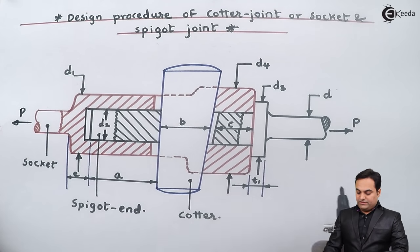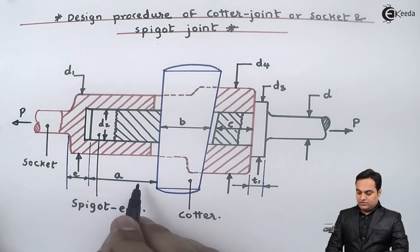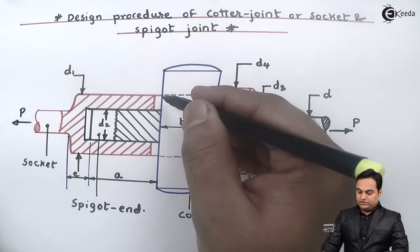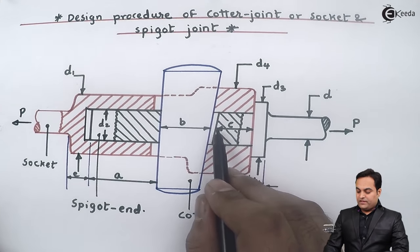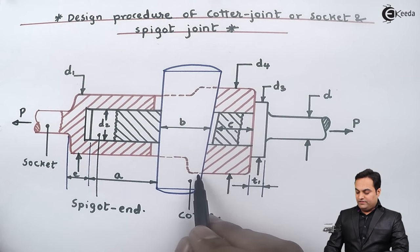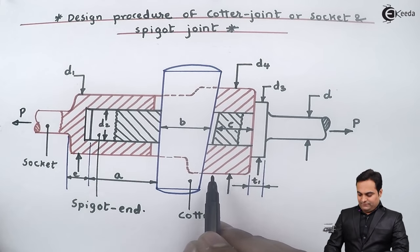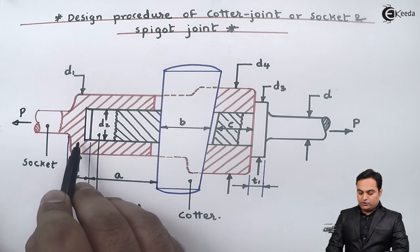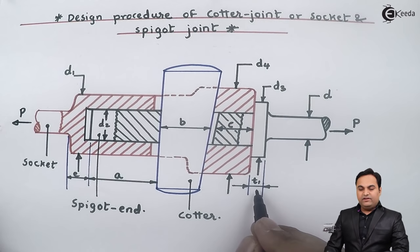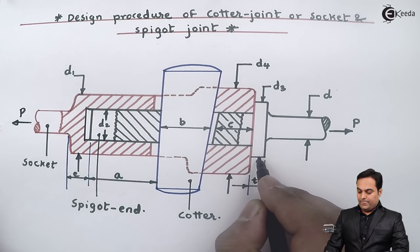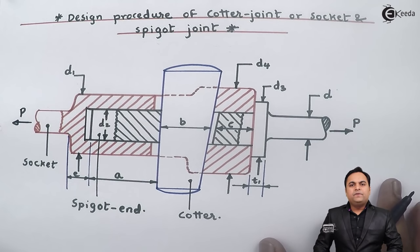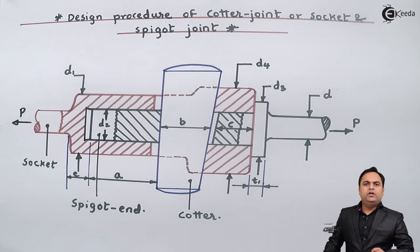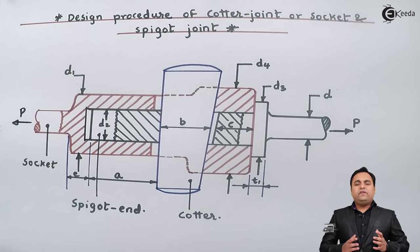A is the distance from the end of the slot to the end of the rod. C is approximately taken as the thickness of the socket collar. E is the thickness of the socket. T1 is the thickness of the spigot collar. T is the thickness of the cotter, which is not visible in this view. Now after explaining this diagram, we can start with the designing procedure for this cotter joint.